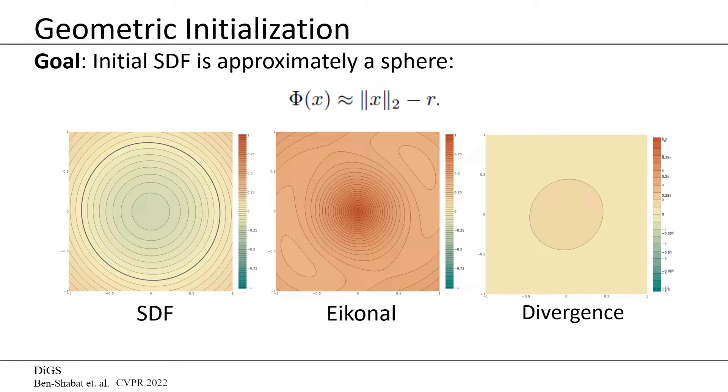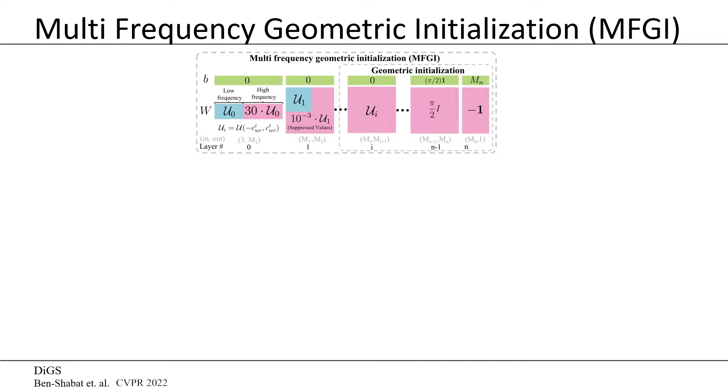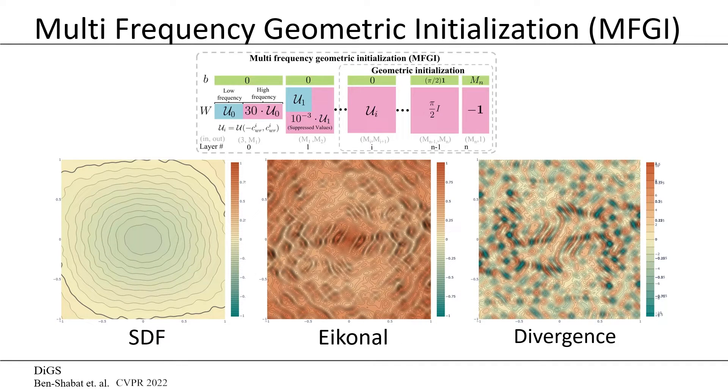While there are benefits for this smooth initialization, for sine activations we need high frequencies to capture the fine detail. Therefore, we propose the Multi-Frequency Geometric Initialization, MFGI, to insert the high frequencies back. For full detail on parameter initialization, please refer to the paper.